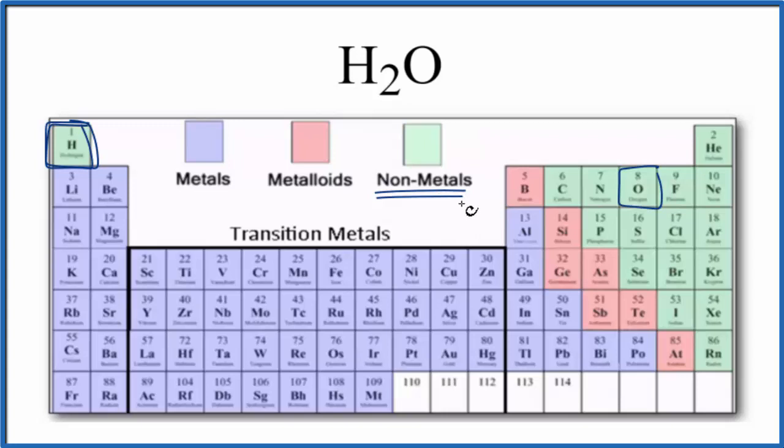When we have two nonmetals, it's going to be a covalent compound, sometimes called a molecular compound. Let's take a look at the structure of water to understand what that means when we say water is a covalent compound.